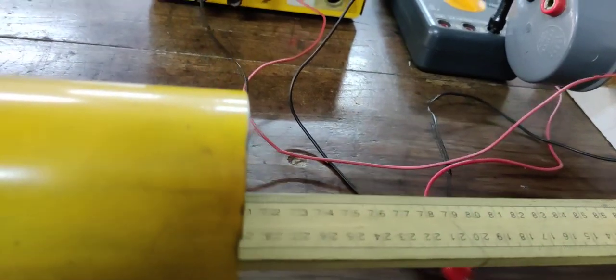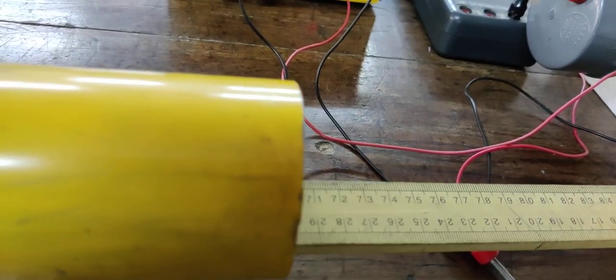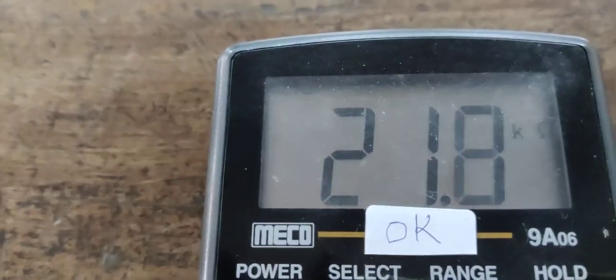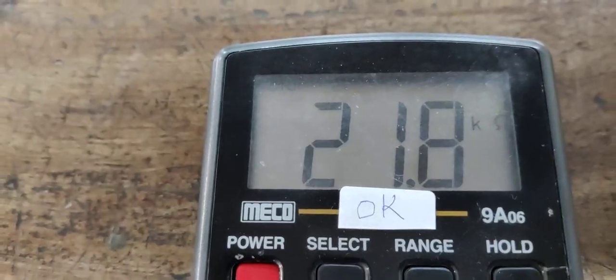Then I take it further outside by 10 more centimeters, and as I observe, as the distance increases, the resistance has further increased - it has gone to 21.8. Like this, you can take the readings up to 50 centimeters: 10, 20, 30, 40, 50 centimeters. In all these cases, you will find as the distance of the LED from the LDR increases, the intensity of light falling on the LDR reduces, and that is why the resistance of LDR will keep increasing.